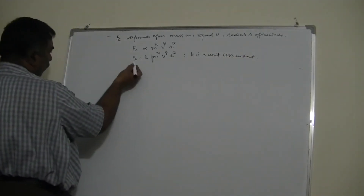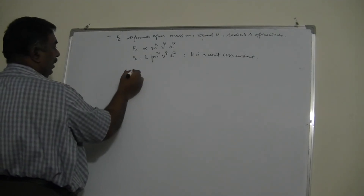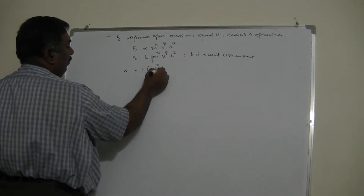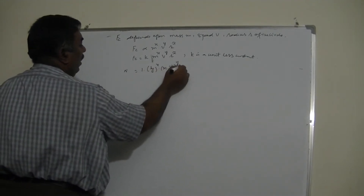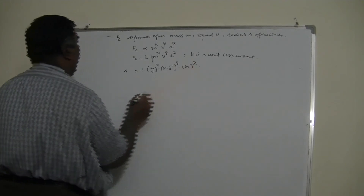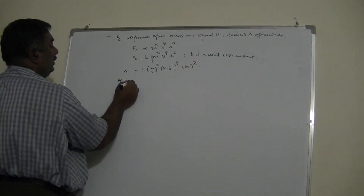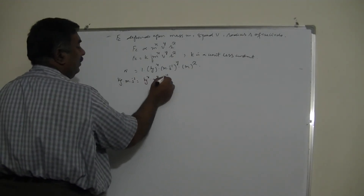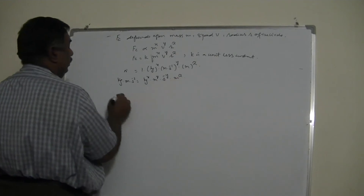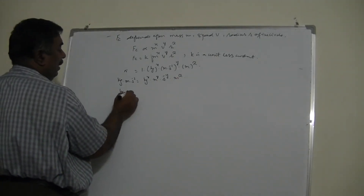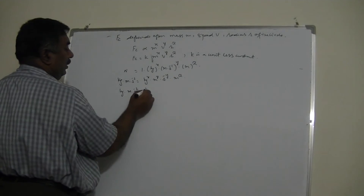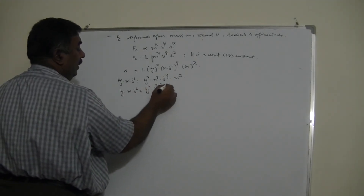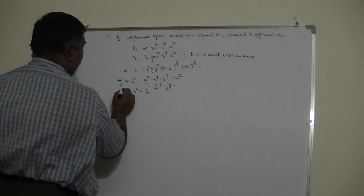Centripetal force is a force in Newtons; k has no units; mass is kg^x; velocity is (m/s)^y; r is m^z. Newton equals kg·m/s², so: kg·m·s^(-2) = kg^x · m^y · s^(-y) · m^z, giving kg^x · m^(y+z) · s^(-y).